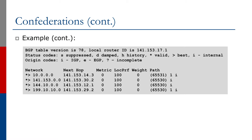If you look at the BGP table, confederation ASs are displayed in the AS path usually with brackets or braces around the confederation autonomous system. This identifies them separately from the global autonomous systems which may also appear in the AS path.